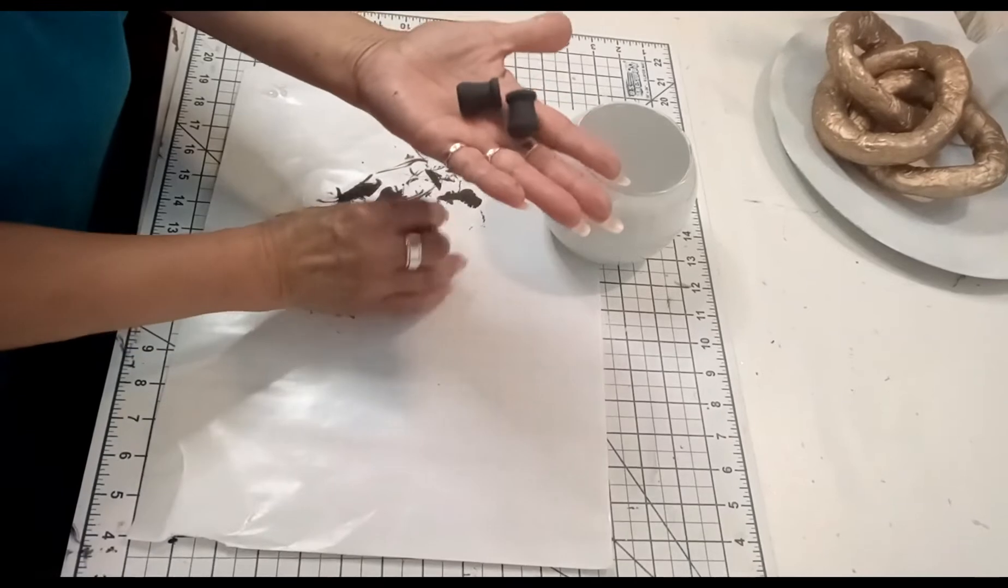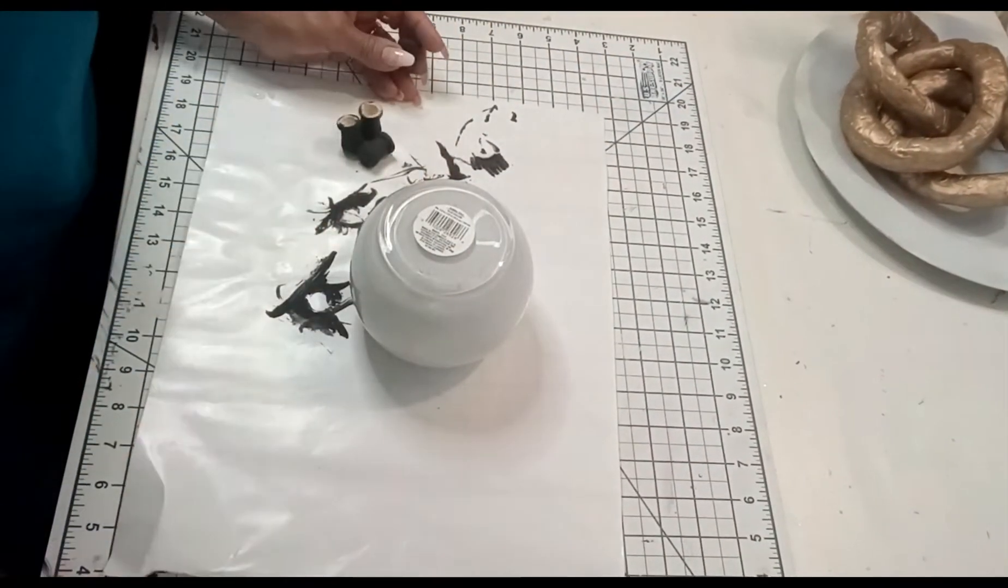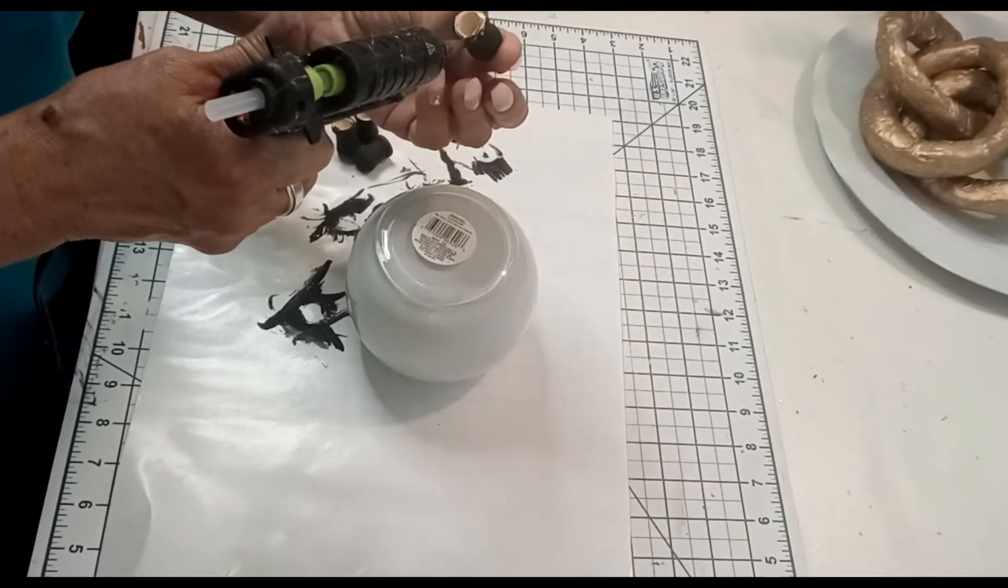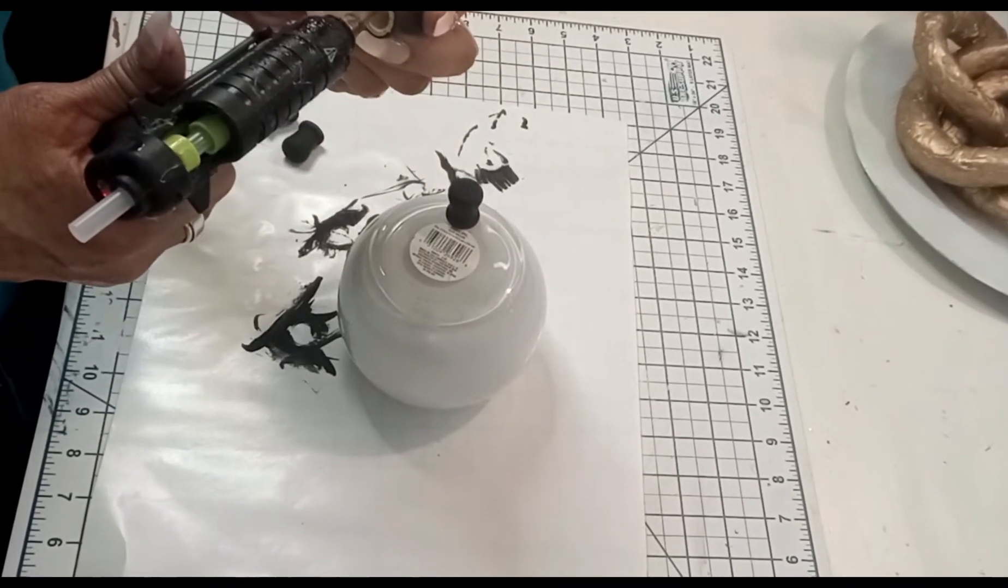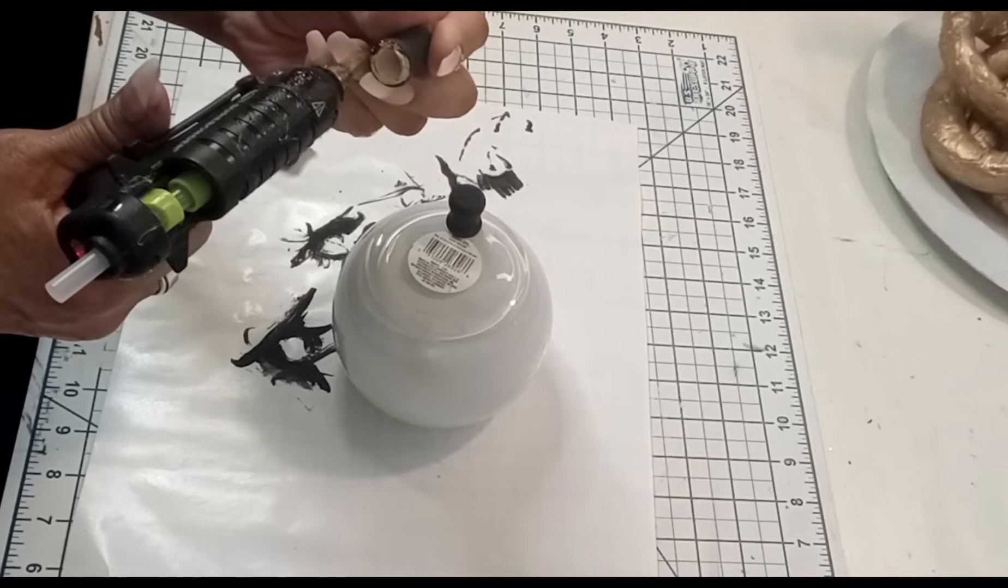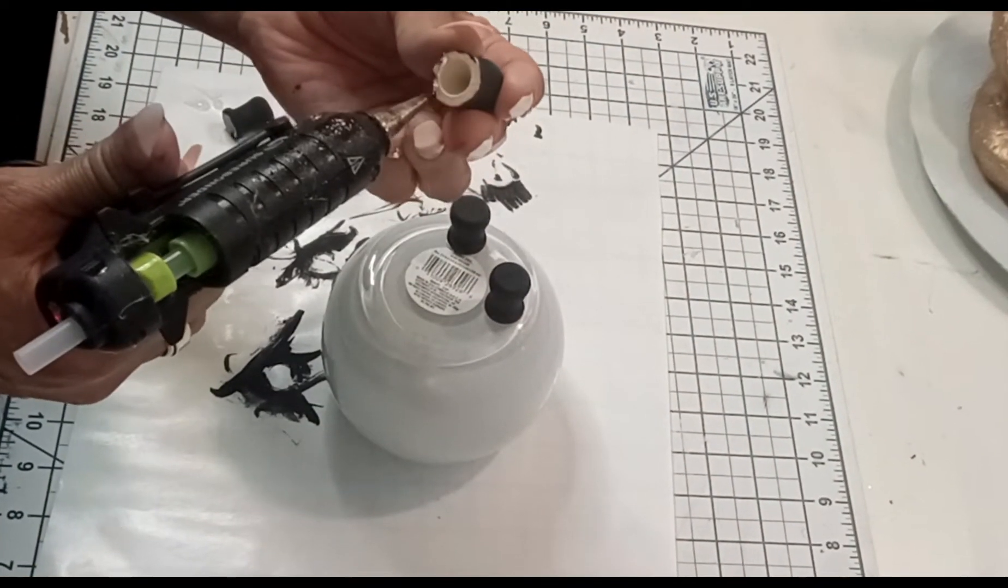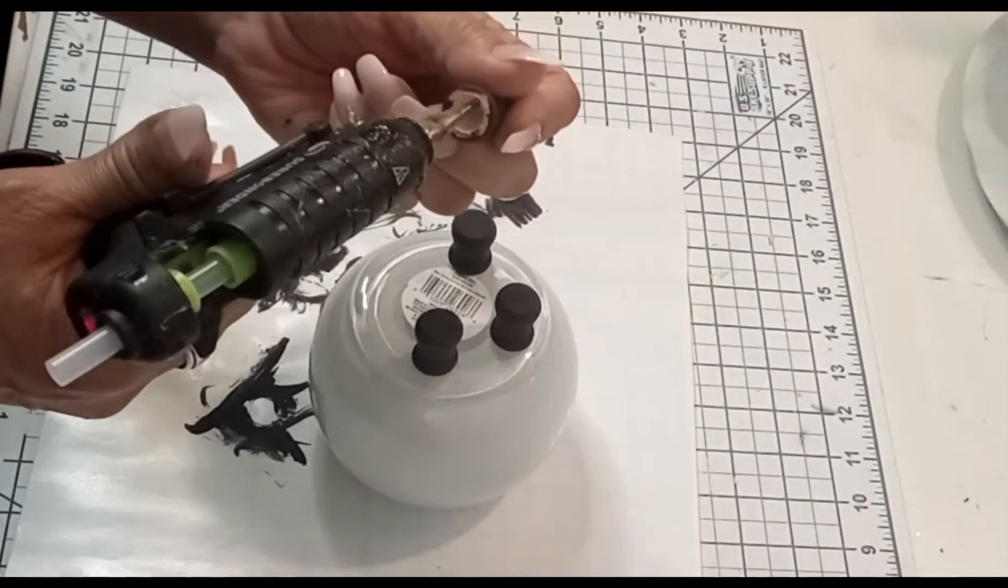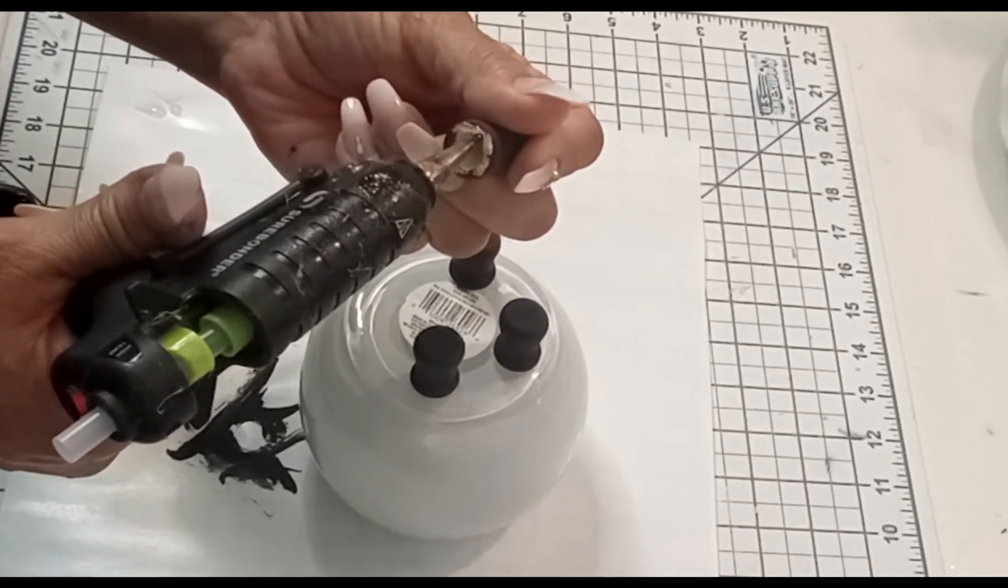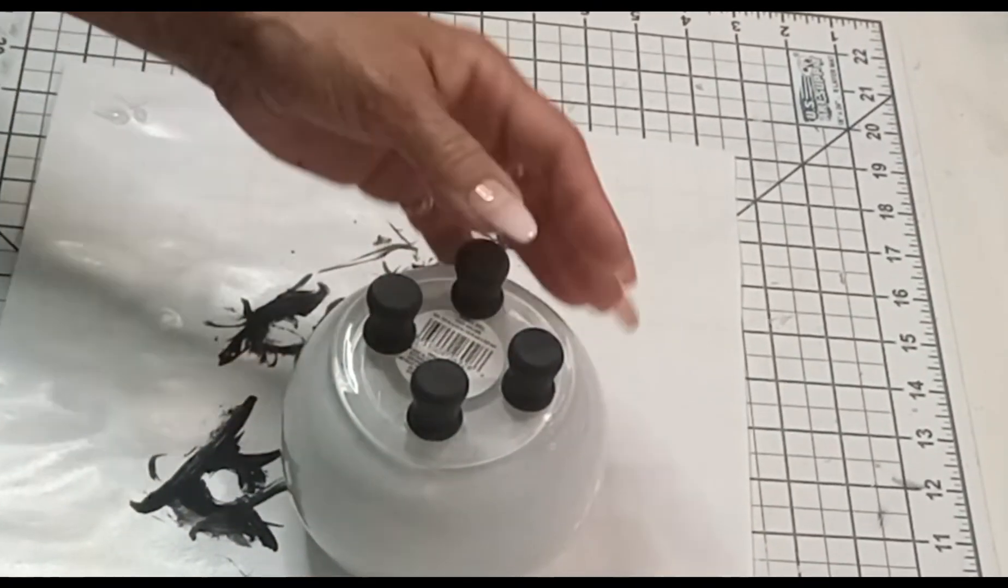Now that everything is completely dry, I'm going to flip the bowl over and glue all four of them with some hot glue. These will be the legs. Let me know what you think about these beautiful legs on this beautiful bowl.